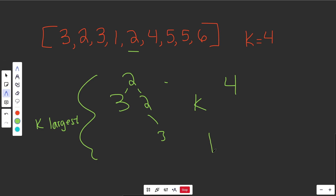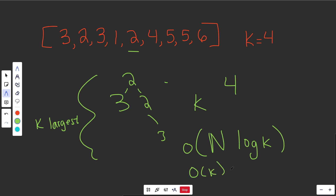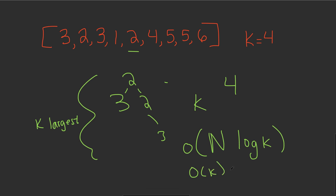The runtime is O(n log k) — n for the array size, and log k for each push and pop operation. This takes O(k) space since we're explicitly storing k things in the heap, and we're not doing that in place since we're not calling heapify. Let's code this solution up.